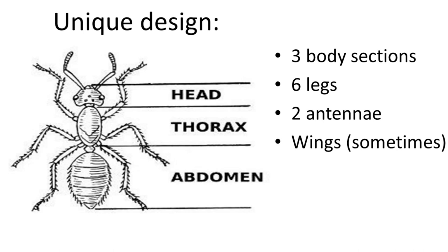What makes insects different from other arthropods is their anatomy. Insects have six legs, and their body is divided into three parts: the head, the thorax, and the abdomen. This is much different from other arthropods such as arachnids, where there is no distinct thorax and head — they are more or less fused in what is called the cephalothorax. Insects also have two antennae, and last but not least, they can have wings. Insects are the only arthropods that can possess wings.